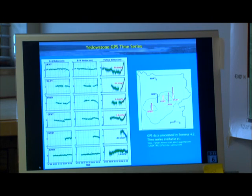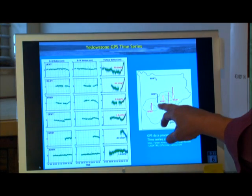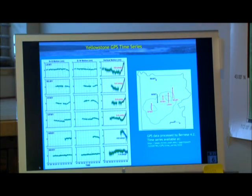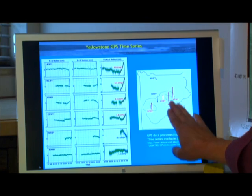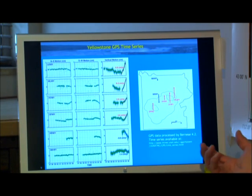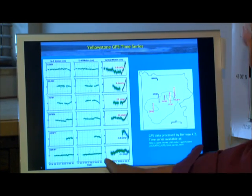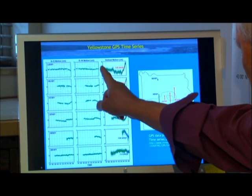We know that because we have GPS stations shown here, the locations of the red arrows. The red arrows are showing the uplift of the Yellowstone caldera, and going back as far as 1997 we have data.